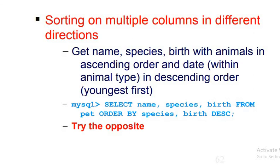We can sort the data even on multiple columns. If the query is: get name, species, birth with animals in ascending order, and within the animal type in descending order by youngest. SELECT name, species, birth FROM pet ORDER BY species, birth DESC. Observe the output, and you can even try it in the lab session.